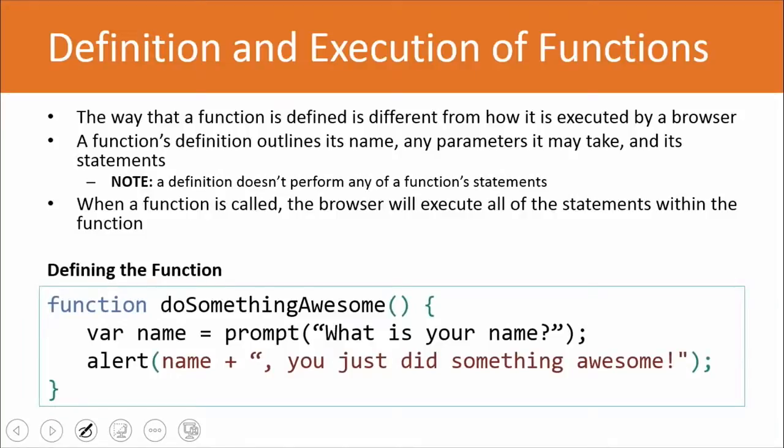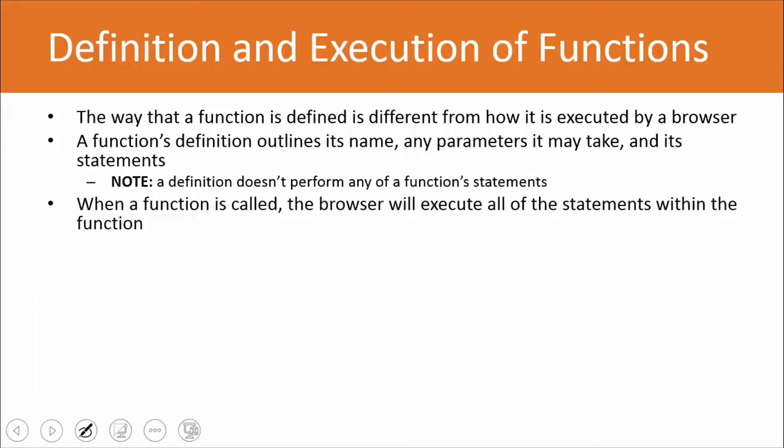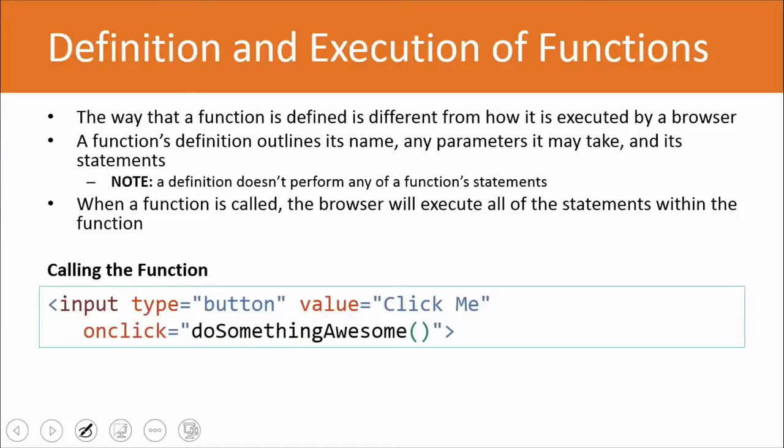So here's an example at the bottom of the screen of defining a function. We're going to do something awesome. That's the name of our function. And then we call the function, so when we click a button that says click me, we're actually going to do something awesome.